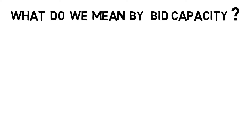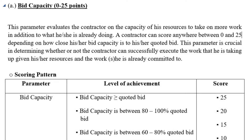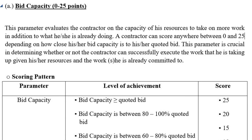First of all, let's see what we mean by bid capacity. As per the evaluation guideline, bid capacity is the capacity of the contractor to take up additional works beyond what he is already doing. This parameter is crucial in determining whether the contractor can successfully execute the works given his resources and the work he is already committed to.